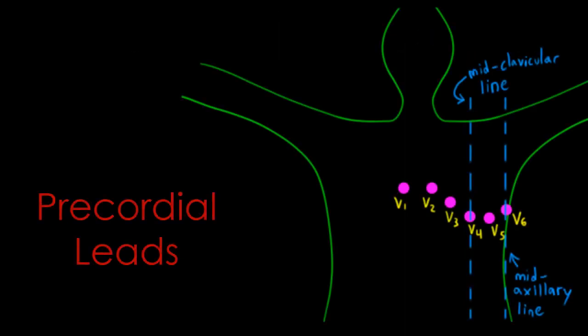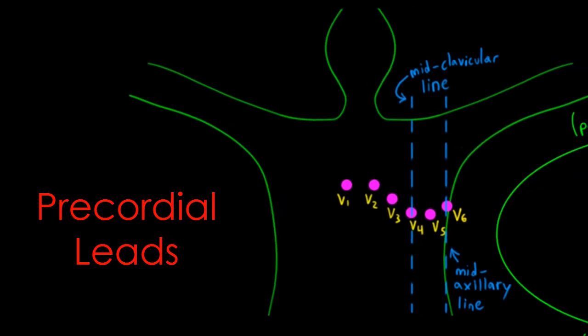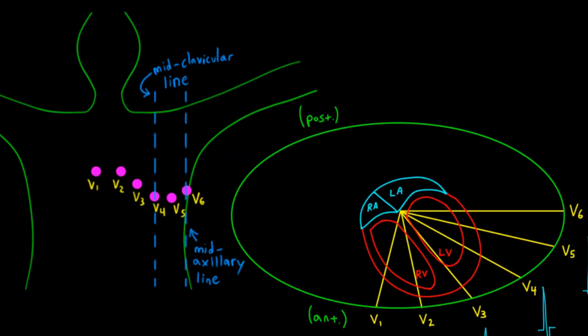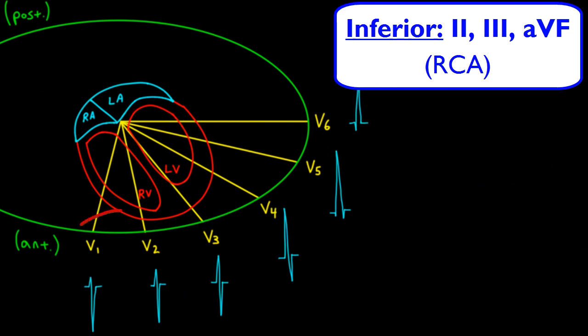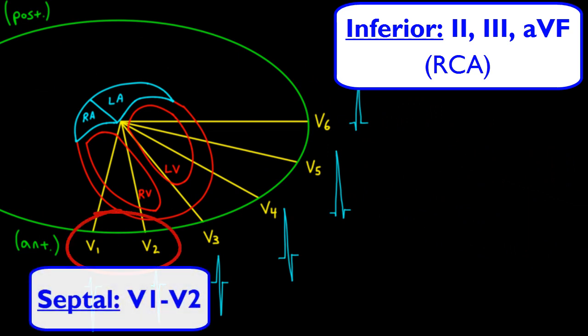Now let's look at our precordial leads, which are also known as the chest leads. The precordial leads allow us to look at the electrical activity of the heart in the anteroposterior plane. Leads V1 and V2 are located on either side of the sternal edge at the fourth intercostal space. Lead V4 is located at the fifth interspace along the midclavicular line. Lead V6 is located horizontally in line with V4, but along the midaxillary line. Now you should know the names of the anatomic lead distributions. So leads V1 and V2 are called the septal leads because they give us a good look at the intraventricular septum.